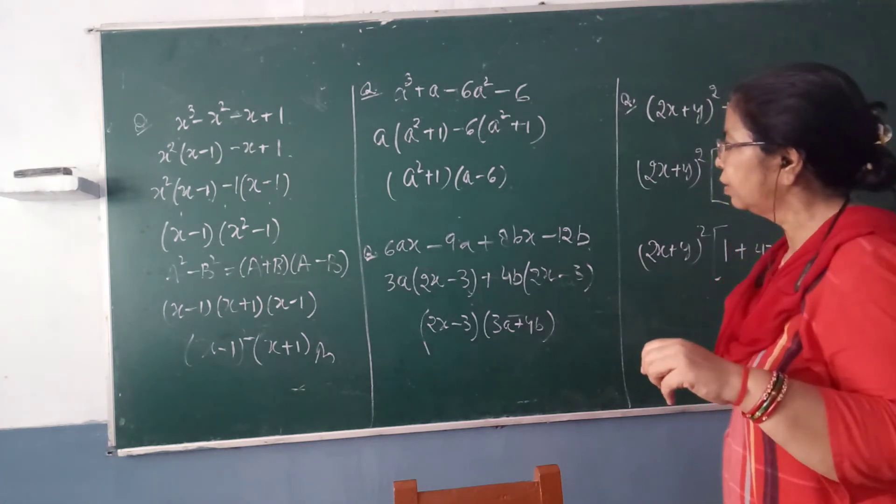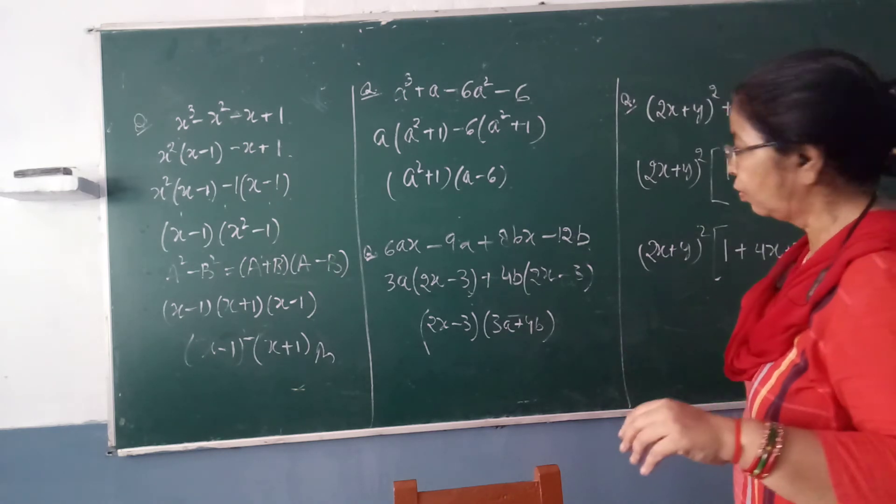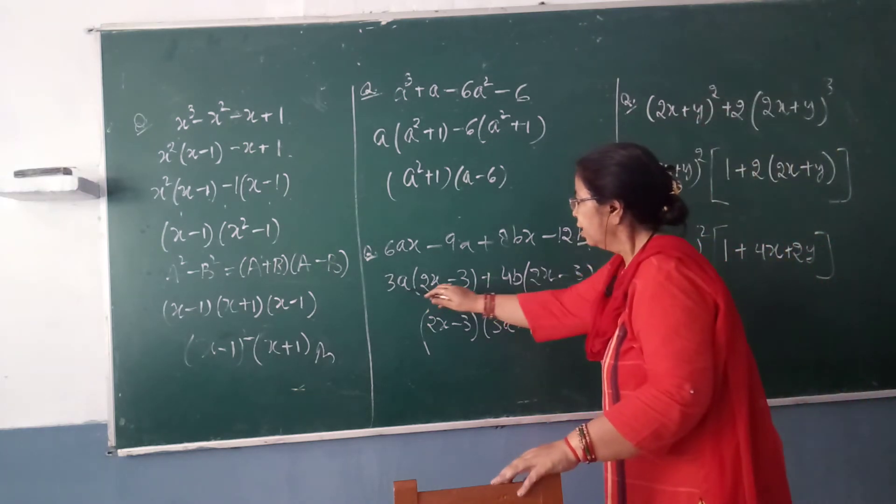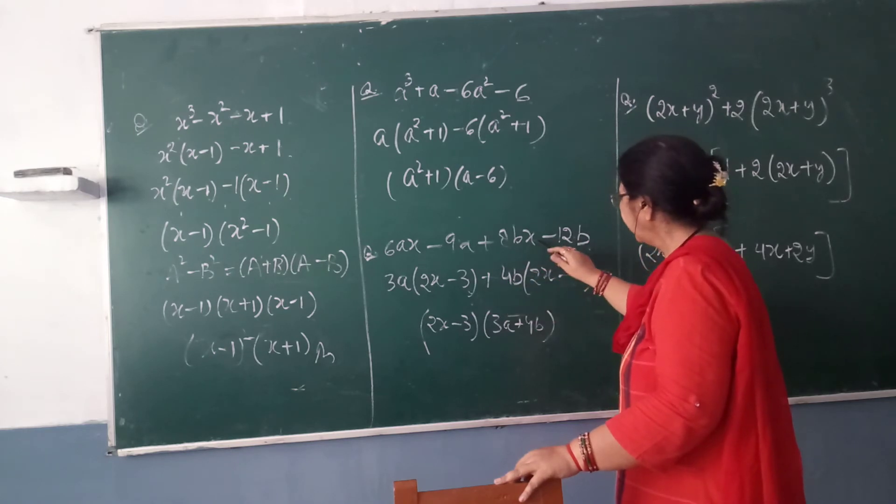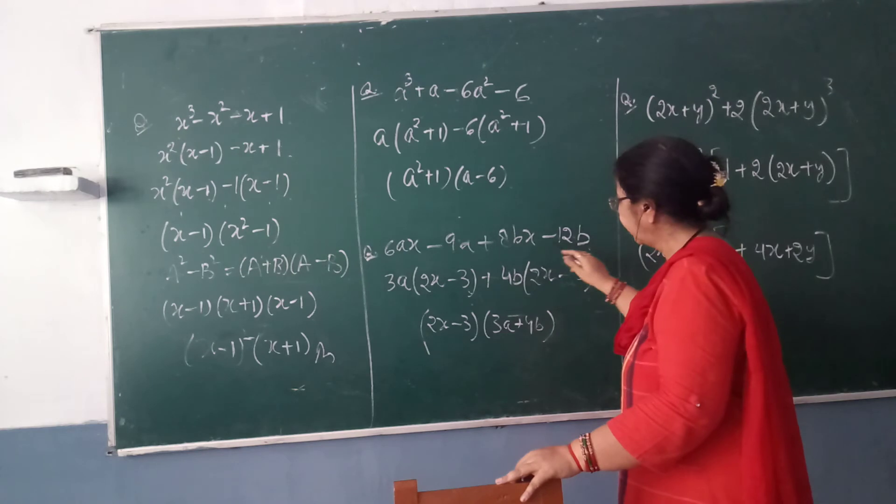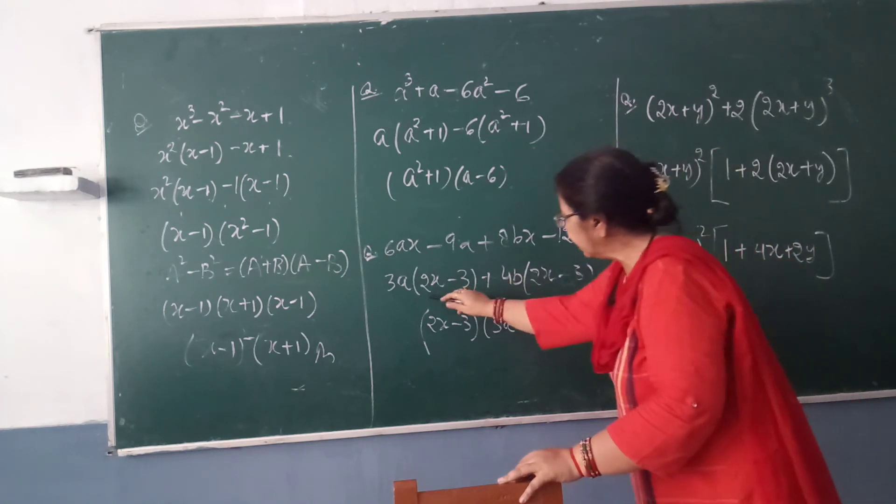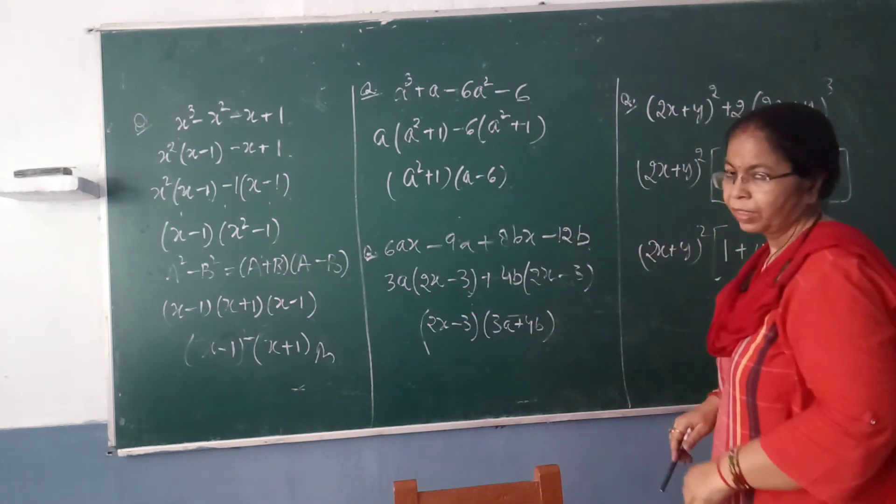Now here, in the 4 table, both 8 and 12 come, and b is also there. So we can say 4b. Now if these brackets are the same, we can take as common 2x - 3.